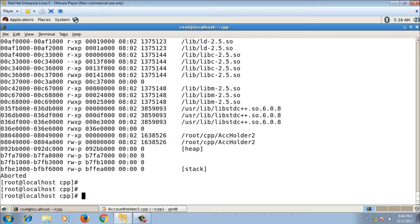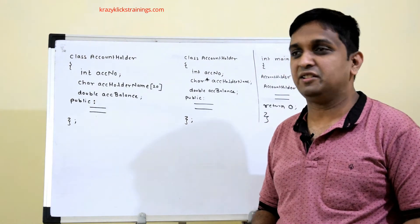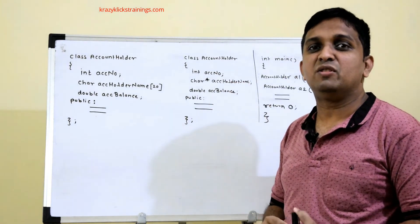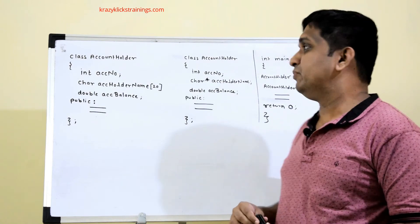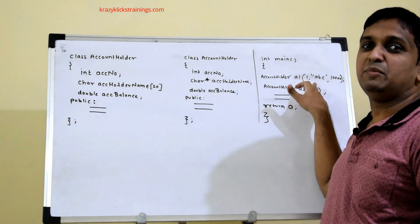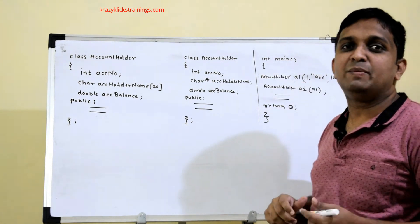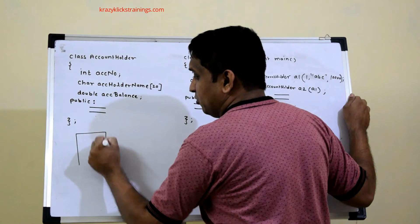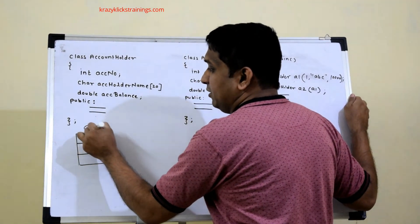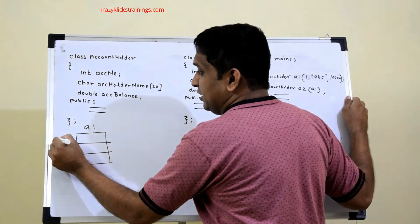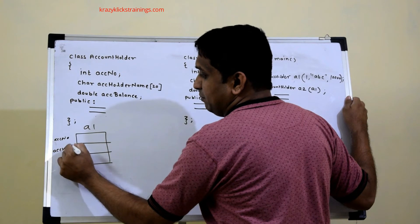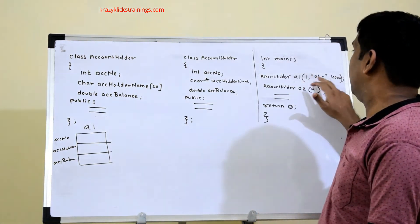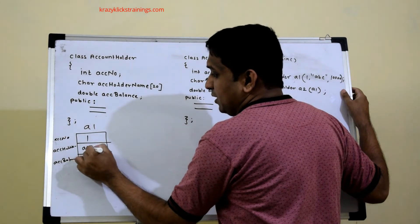We implemented AccountHolder in two ways. In the first declaration the name is a character array; in the second it is a character pointer. Suppose object a1 is created with values 1, 'abc', and 10,000. With the character array declaration the class allocates 32 bytes on the stack, and the values — account number, holder name, and balance — are stored directly in those members.